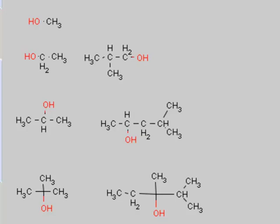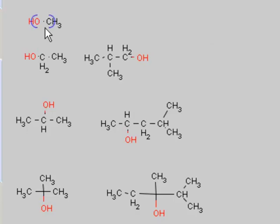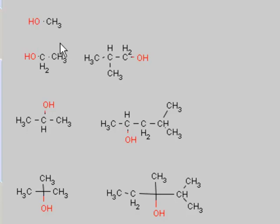Once you determine that a compound is an alcohol because of the OH group bonded to the carbon, the next thing you need to do is determine if the alcohol is the simplest alcohol — methanol — or if it's a primary, secondary, or tertiary. The first one here is the simplest alcohol: it's methanol.